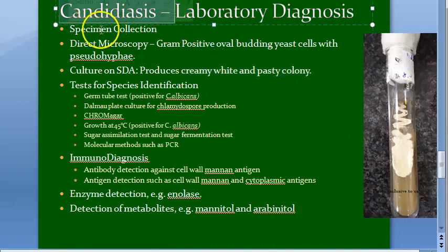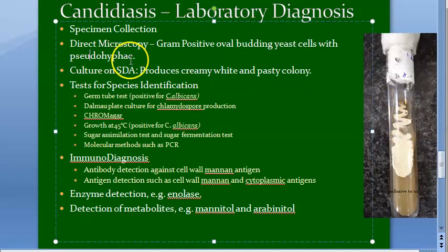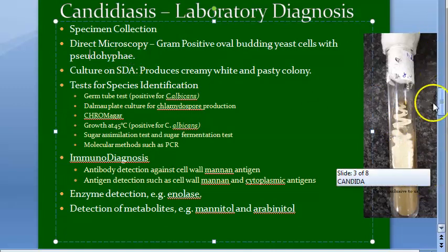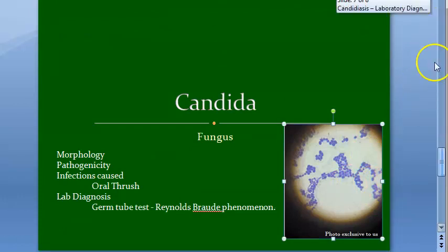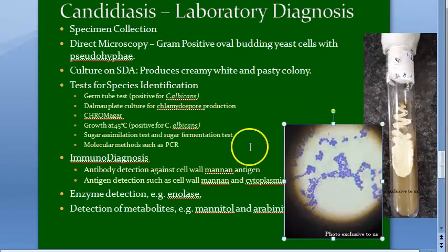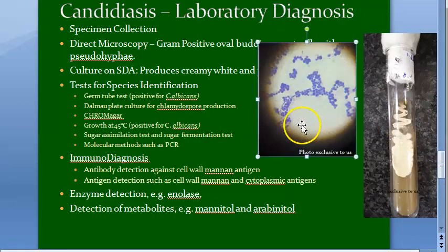First of all you have to collect a specimen, then you can do direct microscopy. In direct microscopy you can see gram-positive budding yeast cells with pseudohyphae. Let us retrieve that diagram from our lab — you can see in direct microscopy all of this.